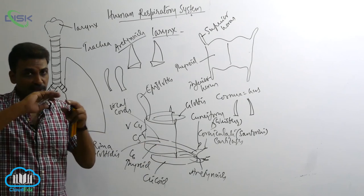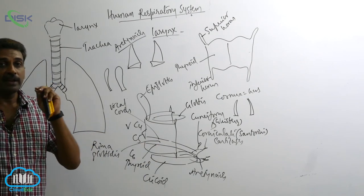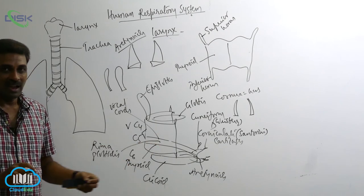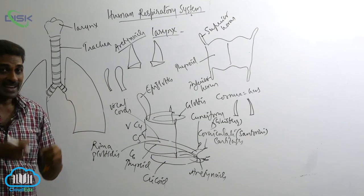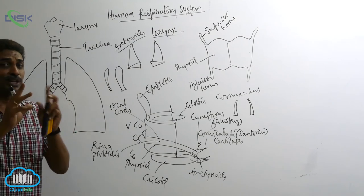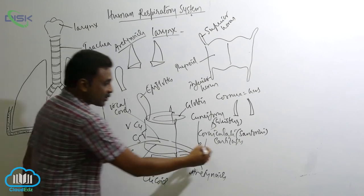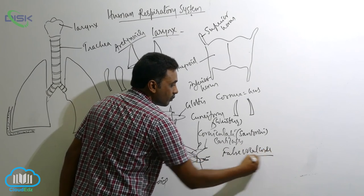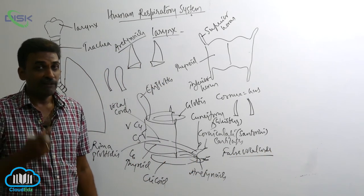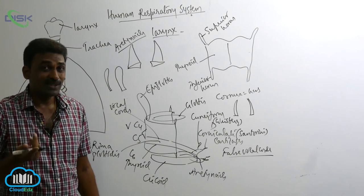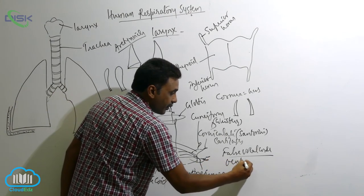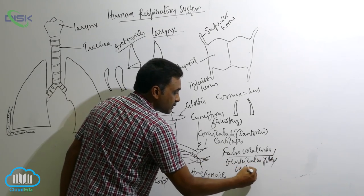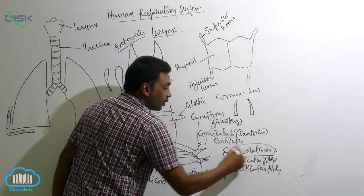Above the vocal cords, you will also find a pair of mucous membranes that are a little thicker and also contain elastic ligaments inside. But when air passes through, they do not vibrate. They are called false vocal cords, also known as ventricular folds or vestibular folds.